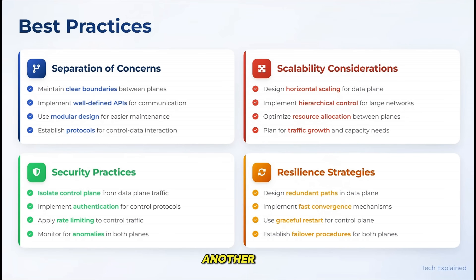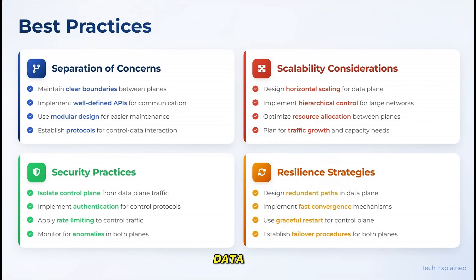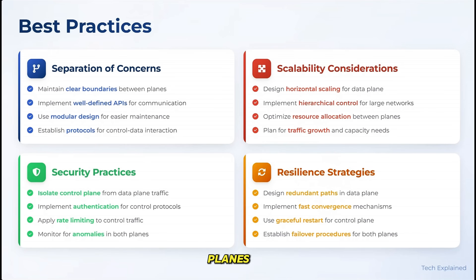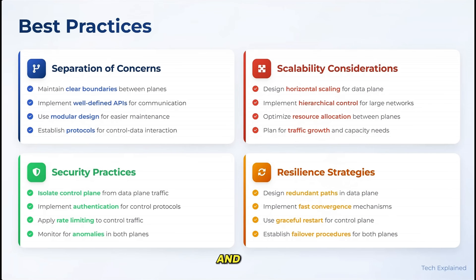Resilience is another important consideration. The data plane should be designed to continue operating even if the control plane experiences issues. This might involve features like nonstop forwarding or graceful restart, which allow the data plane to keep using pre-computed forwarding information even when the control plane is temporarily unavailable. Always consider the interaction between the planes when designing your network — how will control plane decisions impact data plane performance, and how will data plane feedback inform control plane decisions?